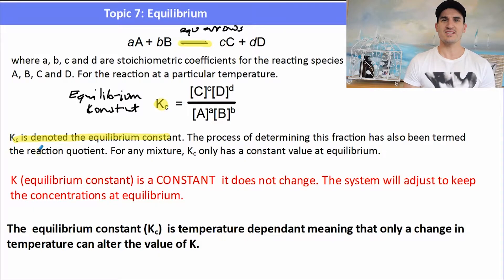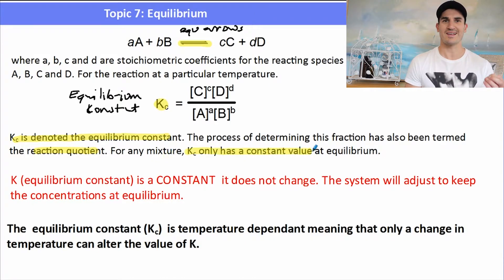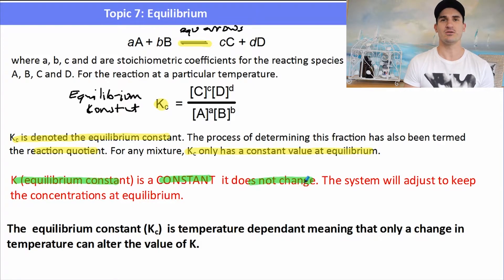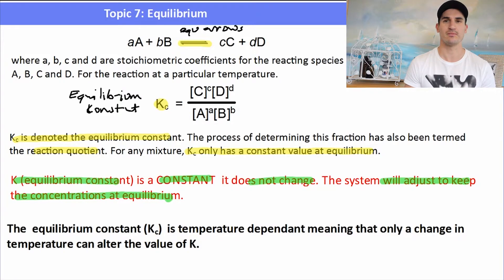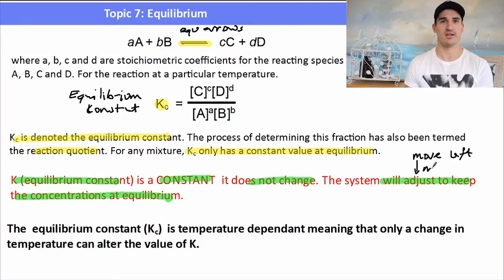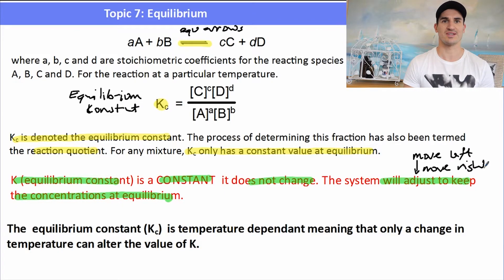The process of determining this equilibrium constant is known as the reaction quotient, and Kc has a constant value at equilibrium — it doesn't change. The system adjusts to keep itself in equilibrium, so it will either move to the left or to the right to balance things out. Kc is a constant.